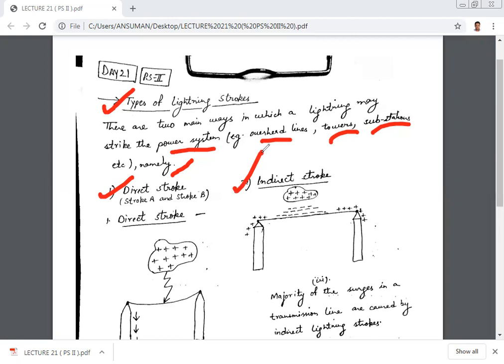Lightning may strike the power system in the shape of direct stroke or indirect stroke. In order to explain the direct stroke, I had taken an example of stroke A and stroke B. In the below figures we are going to discuss what you really mean by stroke A and stroke B.